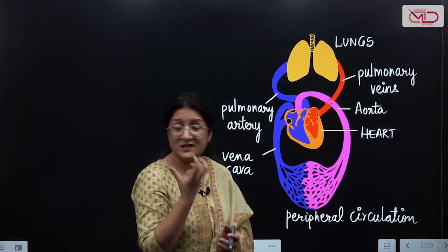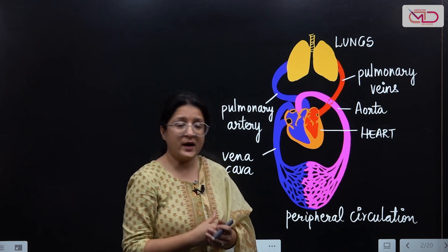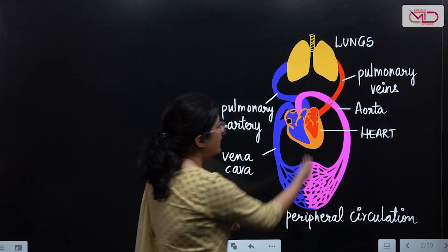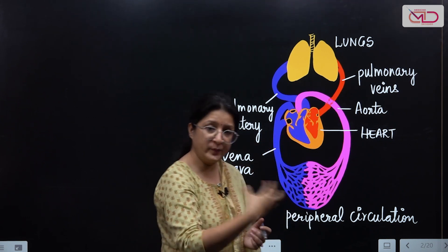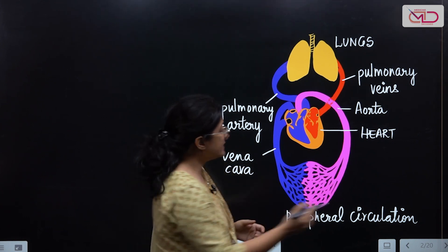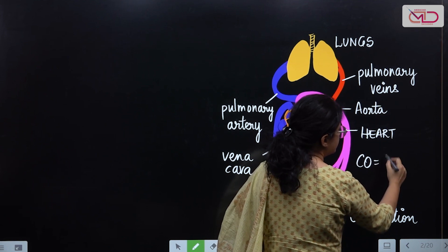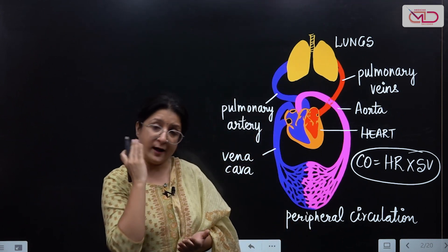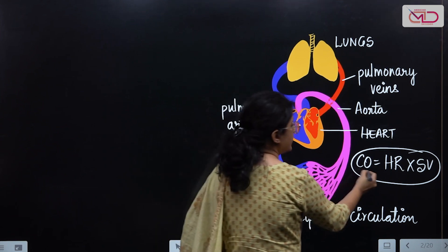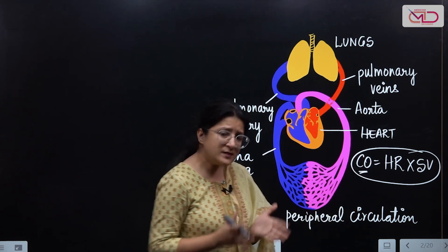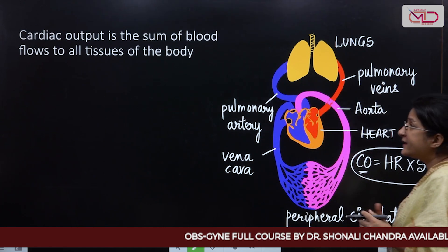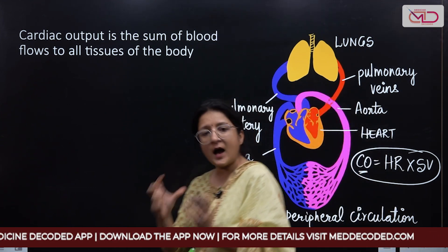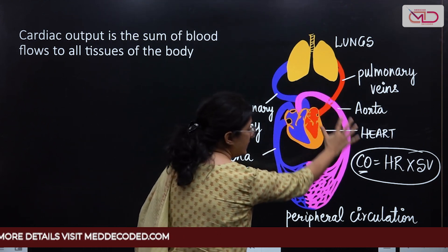At any given point in time, the heart is pumping at a specific rate — the heart rate — which on average is about 70 beats per minute. With each heartbeat, the heart also pumps a specific volume into the circulation — the stroke volume. We can simply say that cardiac output equals heart rate multiplied by stroke volume. The amount of blood the heart pumps forward over one minute is the cardiac output, which is also the sum of blood flows to all tissues of the body.